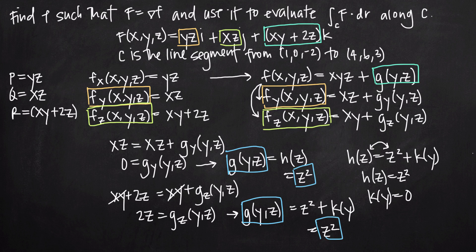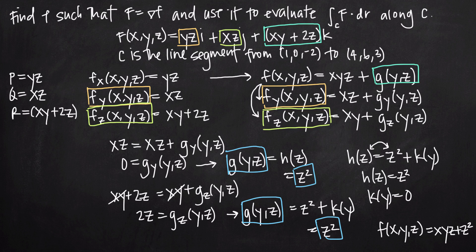Plugging z² back in for g(y, z), we get our complete function: f(x, y, z) = xyz + z². This is the first half of our problem. The second half is using this function f to evaluate the line integral of the conservative vector field capital F.